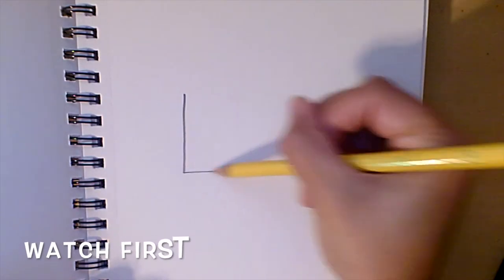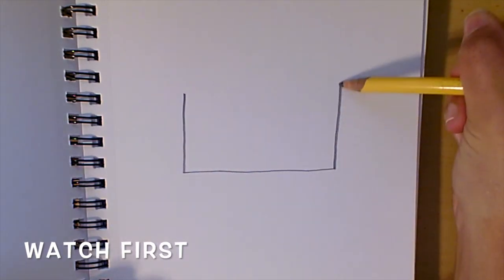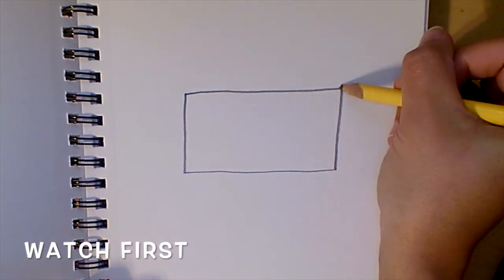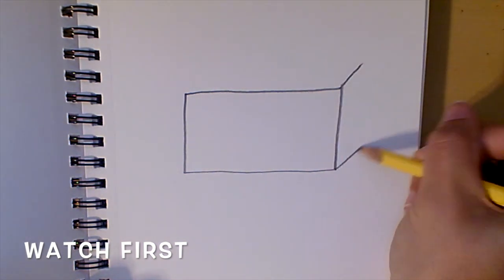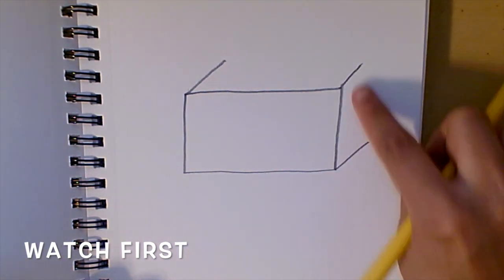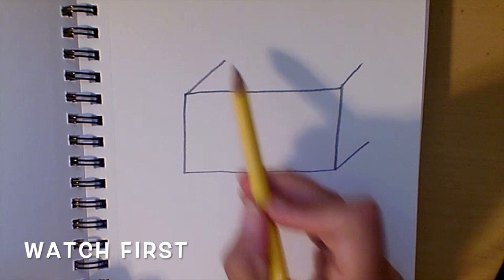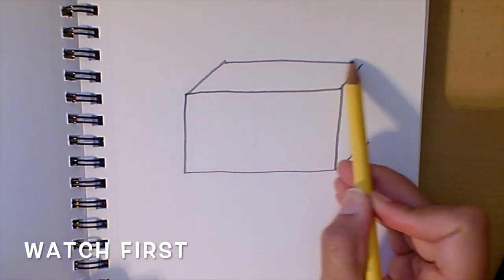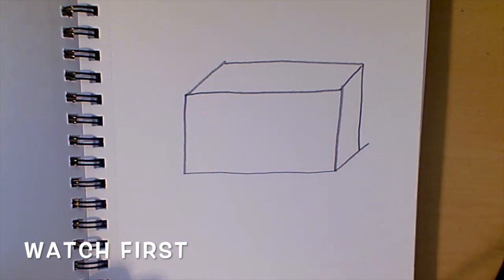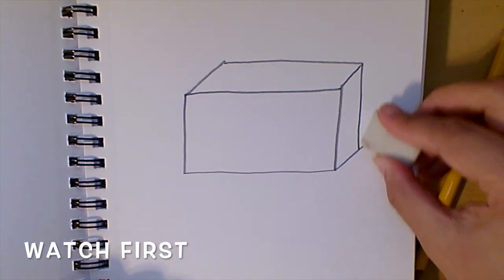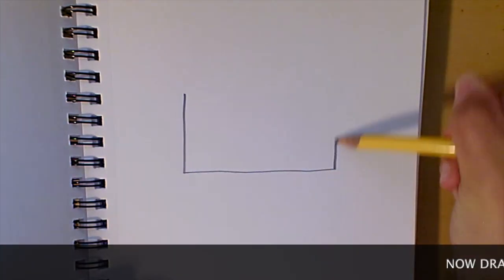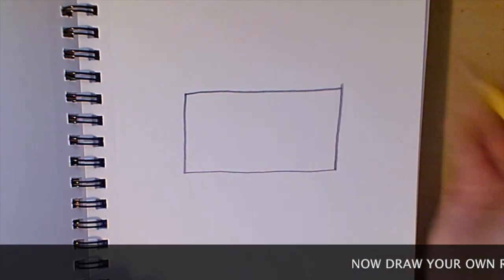Rectangular prism. To make a rectangular prism, start with two angle lines together to make a rectangle. Then, choose three corners to create diagonal lines that all go in the same direction. Lastly, connect them together with a horizontal line and a vertical line. Now, draw your own rectangular prism.